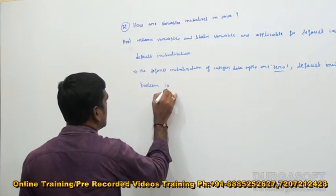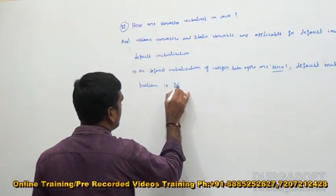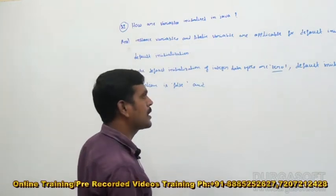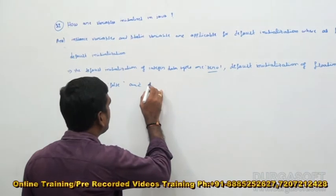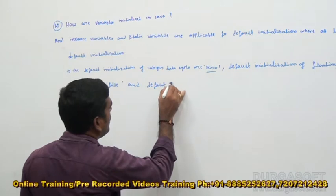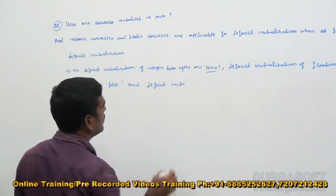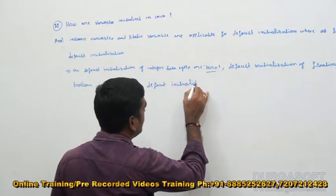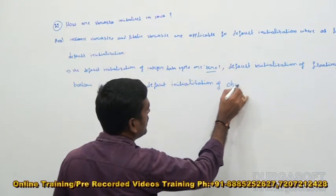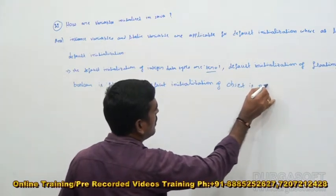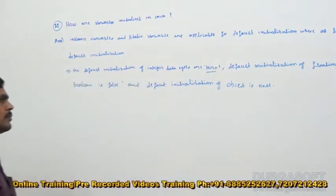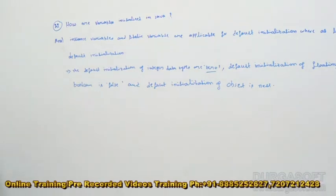Default initialization of boolean is false. And default initialization of object is null. So default initialization is there for instance and static variables.